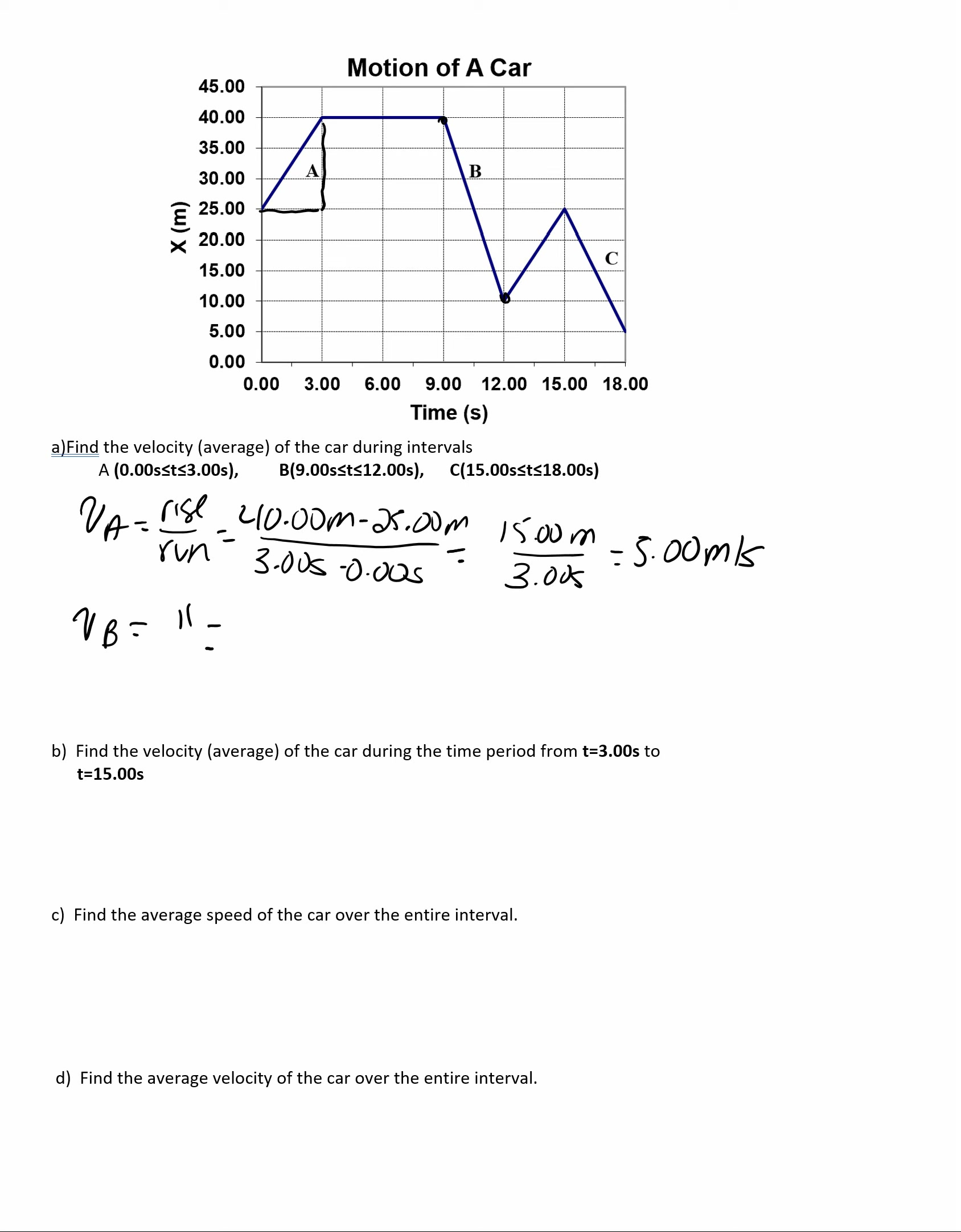10 meters minus 40 meters over 12 seconds minus 9 seconds, which is negative 30 meters over 3 seconds, which is negative 10 meters per second.